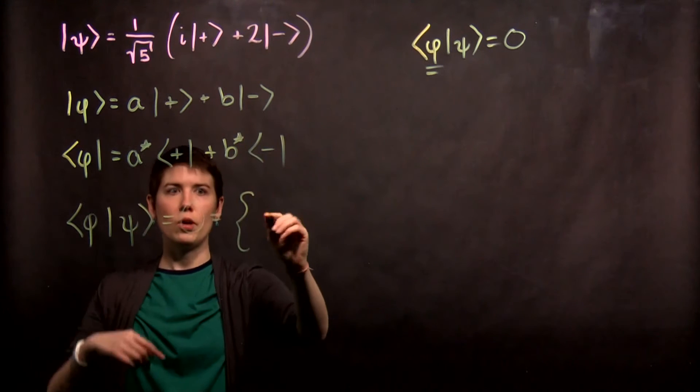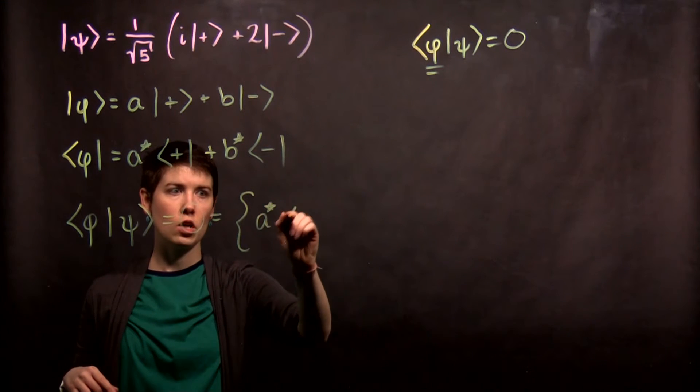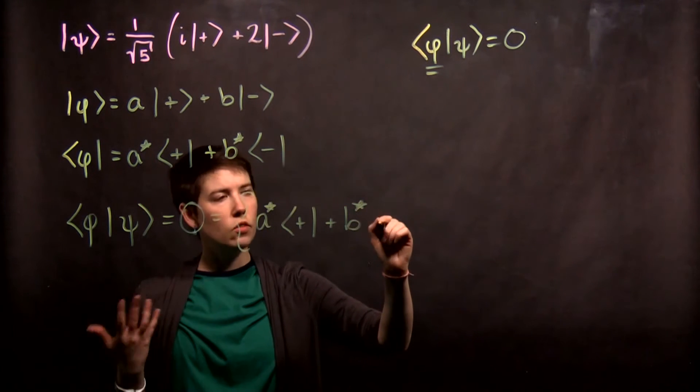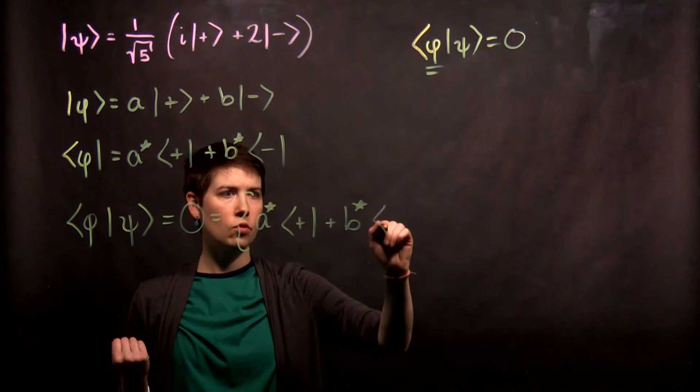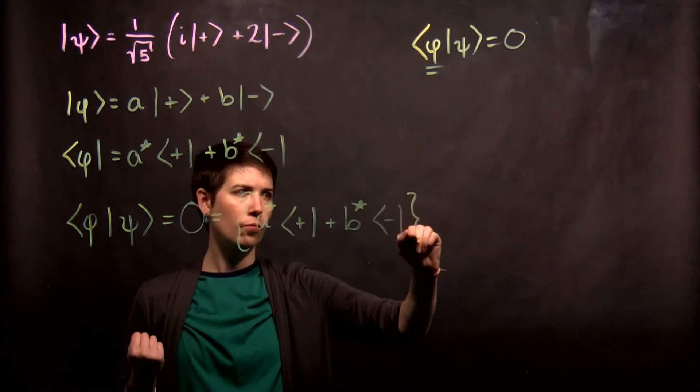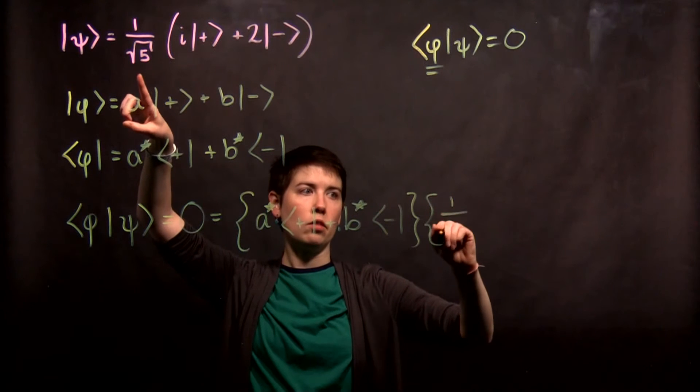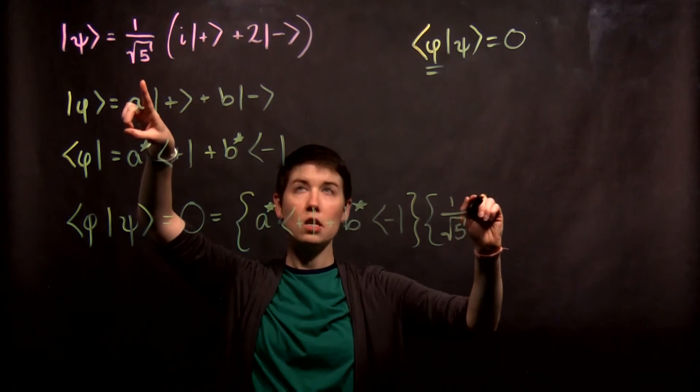So first I start with this one, a star plus b star. And there is some overall phase that we're going to choose at the end.